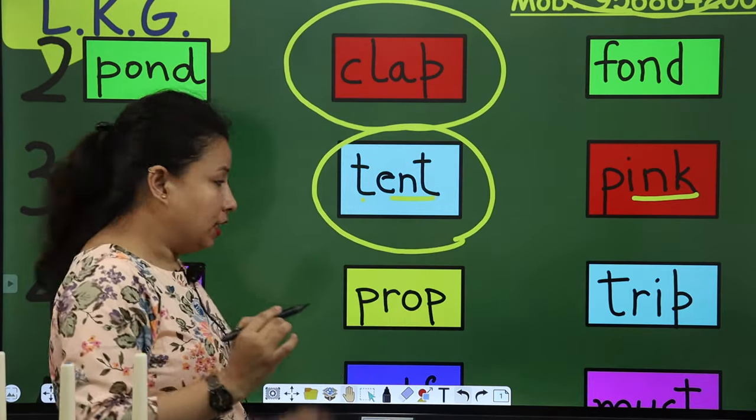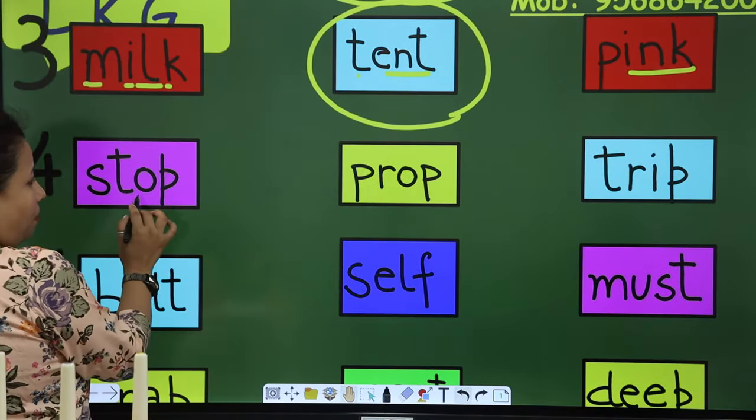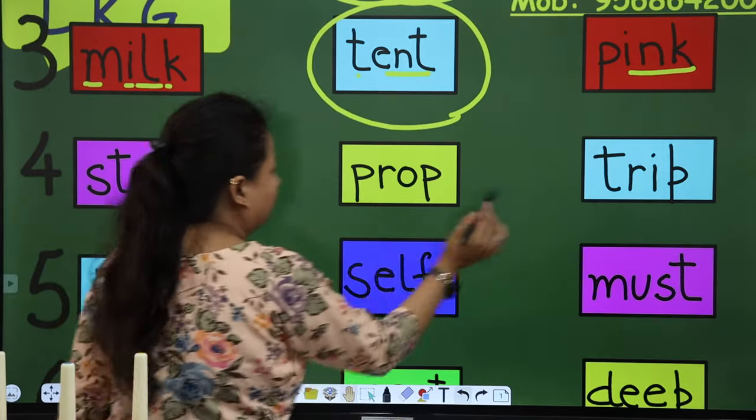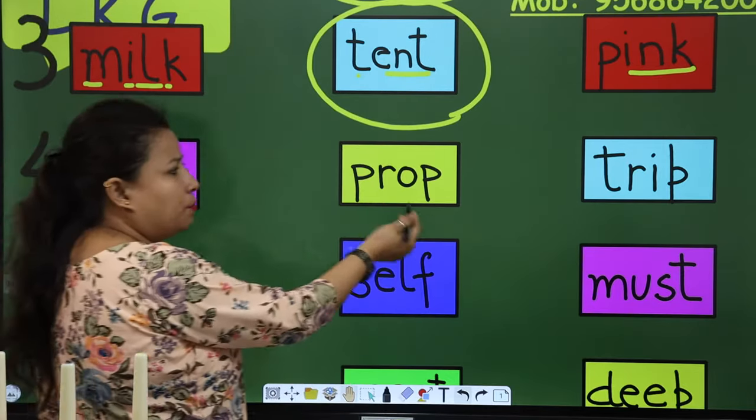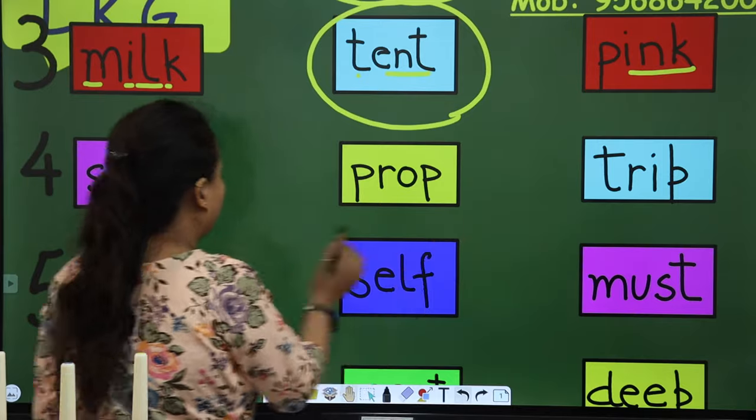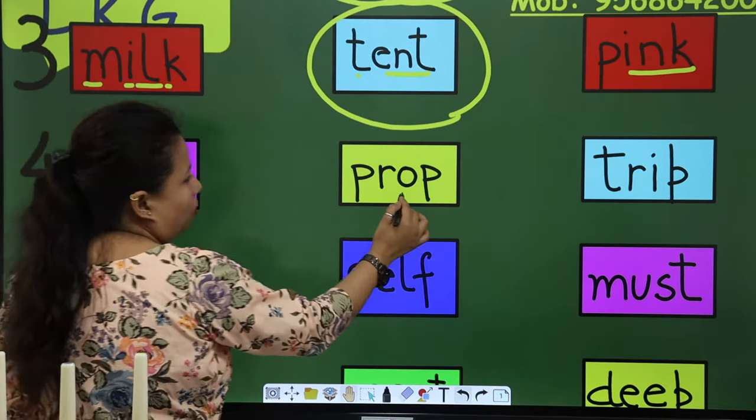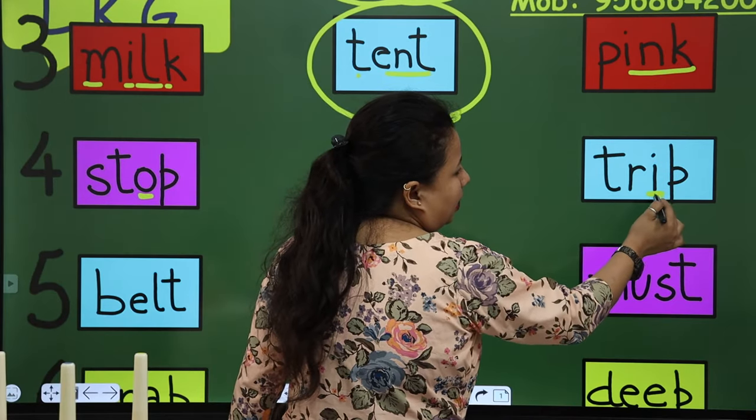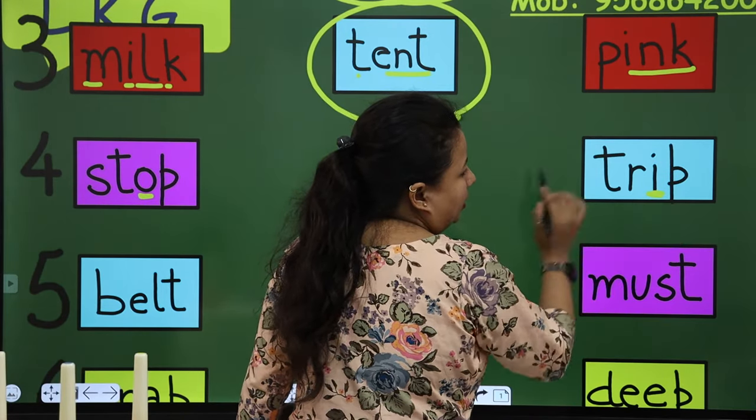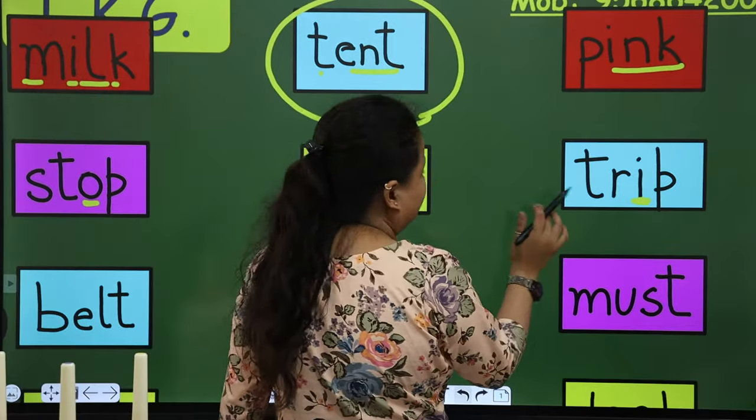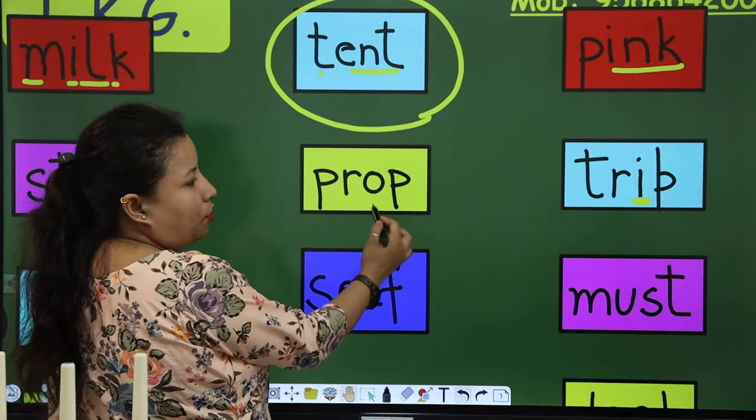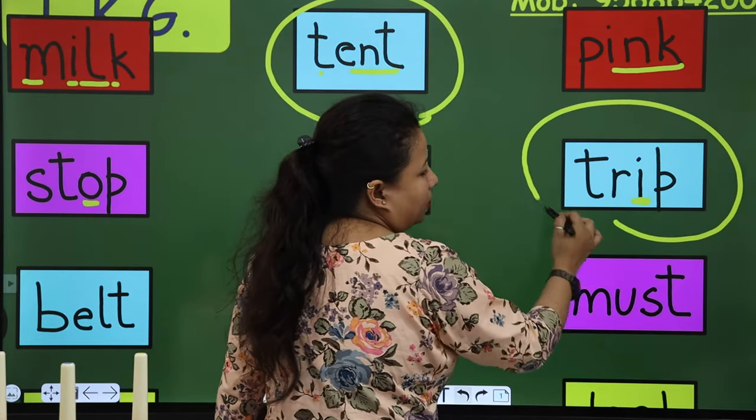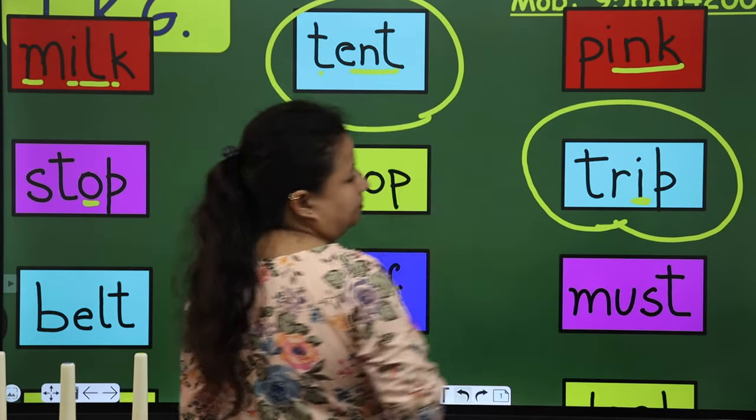Got it? Now next is stop, prop and trip. So stop, prop and trip. In the middle, O and O. But here I or E has come. So this is different. Stop, prop and trip. So trip is the odd one, because the sound is different. That's why.